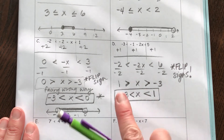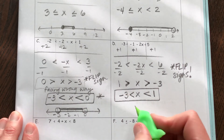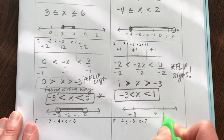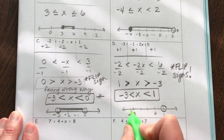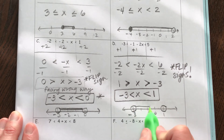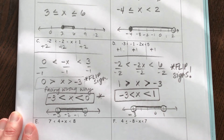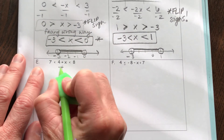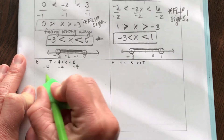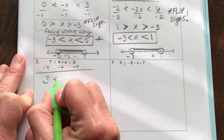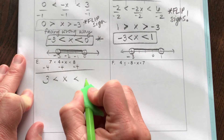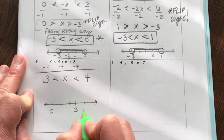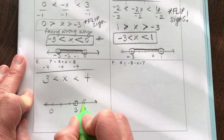So our solution would be in between negative 3 and 1, and on the number line that would look like this — I'm gonna circle 1, circle negative 3, and shade in the middle. And now for the last two, I'm gonna start by subtracting 4 on both sides, so I'll have 3 is less than X is less than 4 — so in between 3 and 4.